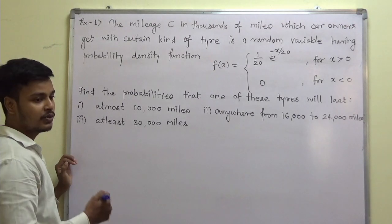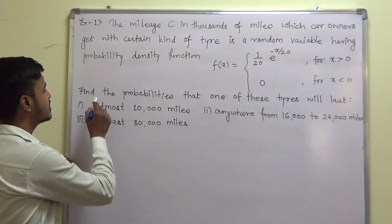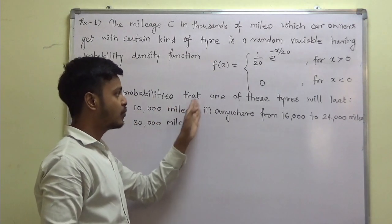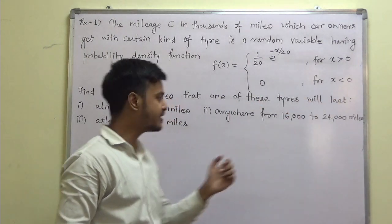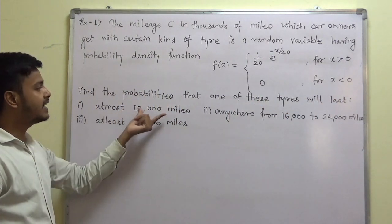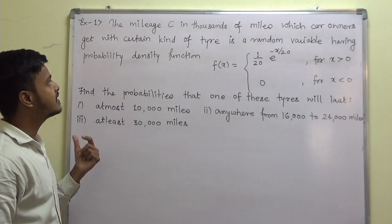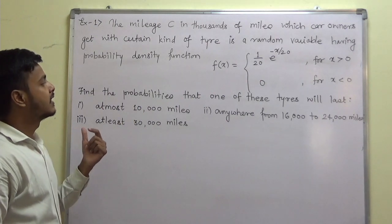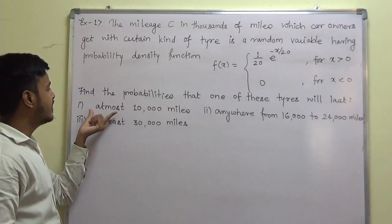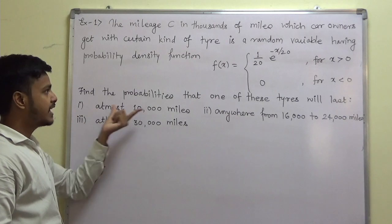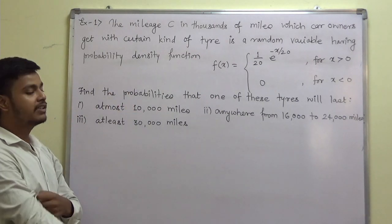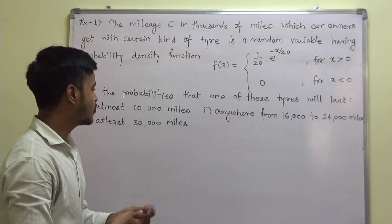What we have to do is find out the probability that one of these tyres will last at most 10,000 miles — meaning the tyre should give a mileage of at most 10,000 miles.